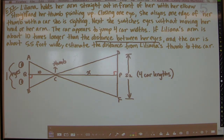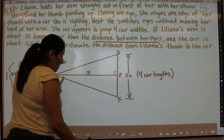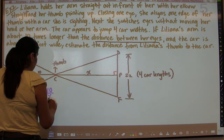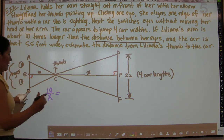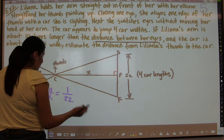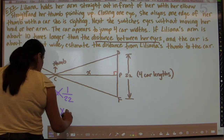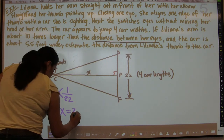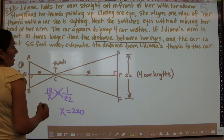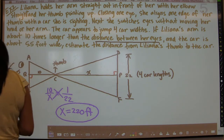Once the triangles are similar, the ratio of the altitudes — 10 to X — equals any ratio of corresponding sides, which is 1 to 22. So 10 times 22 is 220, and X equals 220. The distance from Liliana's thumb to the car is 220 feet.